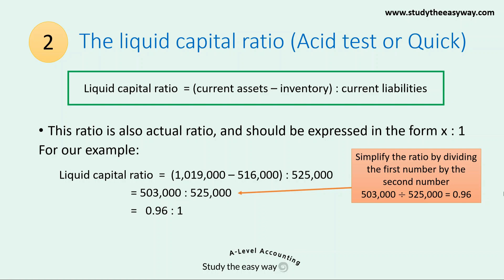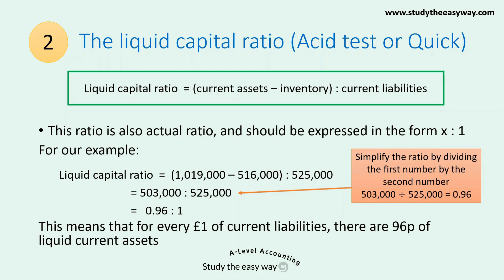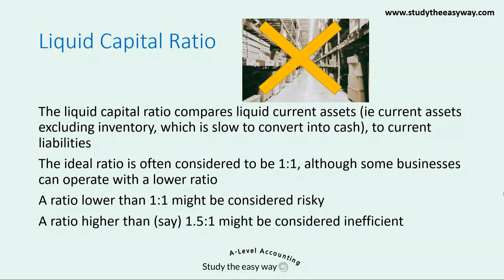The answer is shown to two decimal places. You can interpret this as meaning that for every £1 of current liabilities, there are 96 pence of liquid current assets. The term 'liquid current assets' refers to current assets excluding inventory, because the word 'liquid' refers to being easy to convert into money. So the liquid capital ratio compares liquid current assets — the current assets excluding the inventory, which is slow to convert into cash — to the current liabilities.